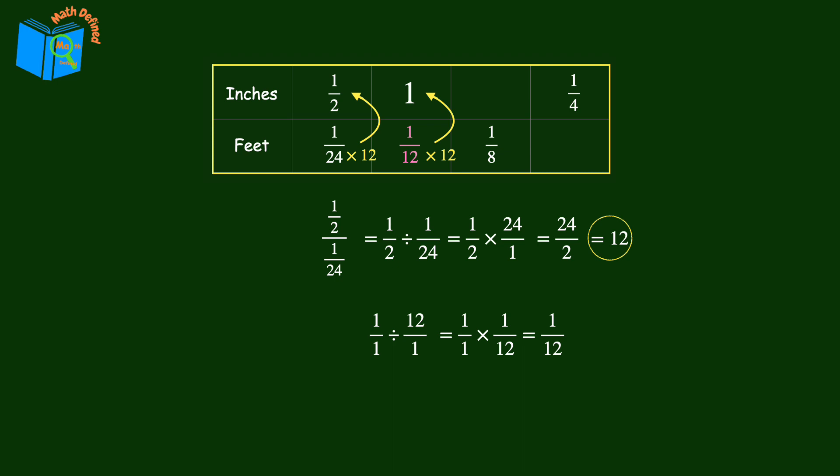To find the next missing value in the table, we will multiply 1 8th by 12. 1 8th times 12 over 1 gives us 12 over 8, which we can simplify by dividing both the numerator and the denominator by 4, resulting in 3 over 2.